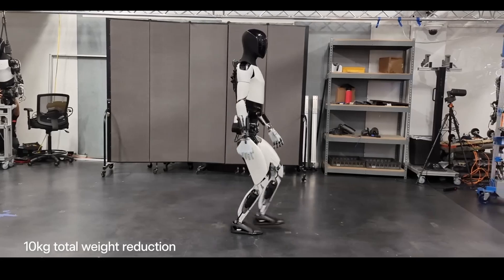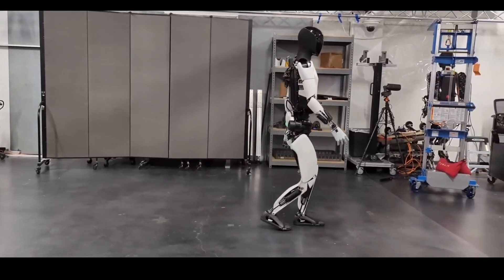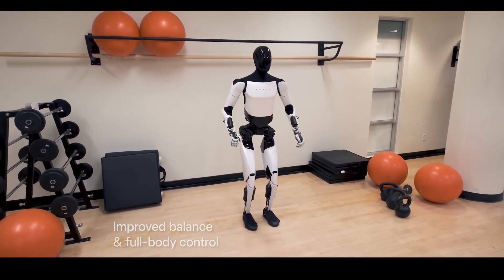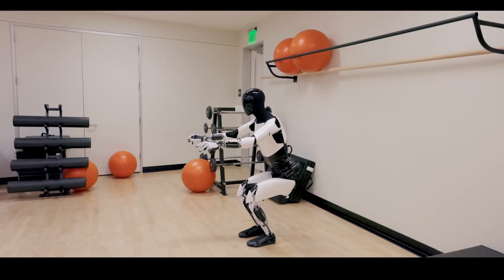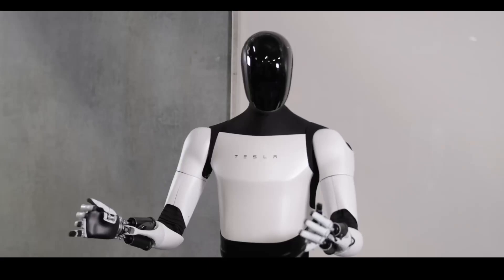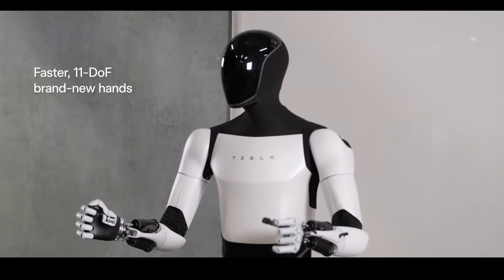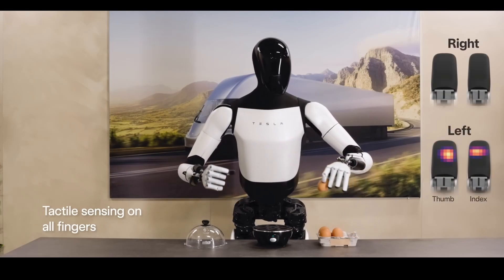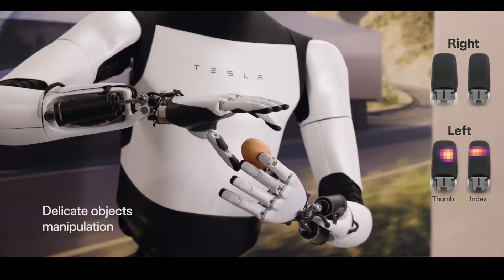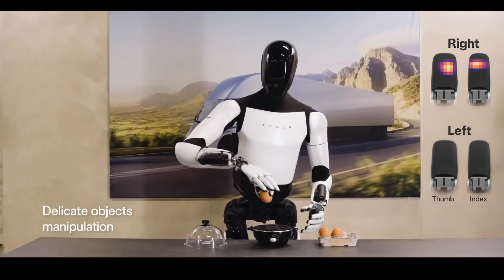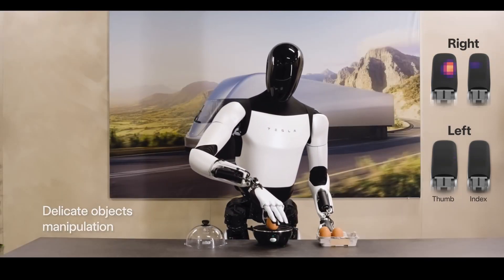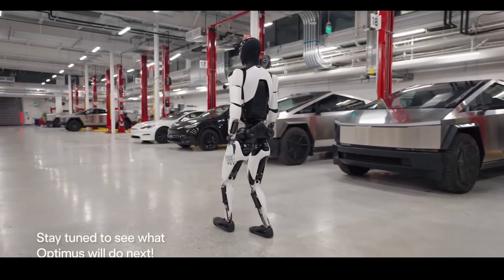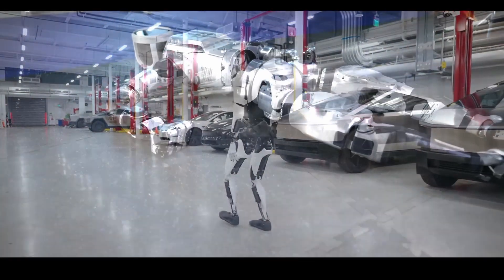To mitigate the unsettling effects commonly associated with this phenomenon, Tesla has adopted a design strategy for Optimus that includes a faceless, human-like head coupled with human-like movements. This approach attempts to maintain a balance between relatability and distinguishability, avoiding the deep discomfort that can occur when robots appear almost, but not quite, indistinguishably human.